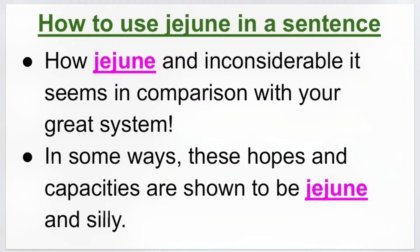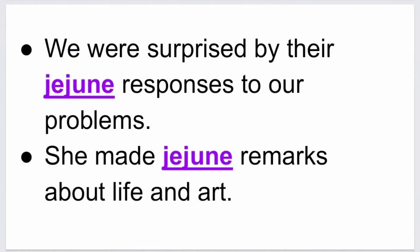Let's learn how to use it in a sentence. Our first example is: how jejune and inconsiderable it seems in comparison with your great system. Our second example is: in some ways these hopes and capacities are shown to be jejune and silly. Our third example is: we were surprised by their jejune responses to our problems. And fourth example is: she made jejune remarks about life and art.